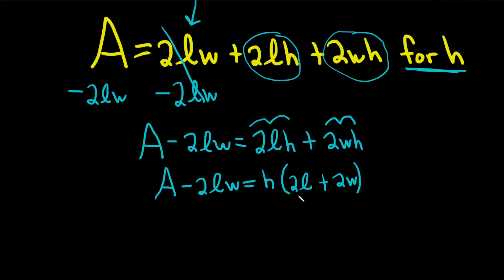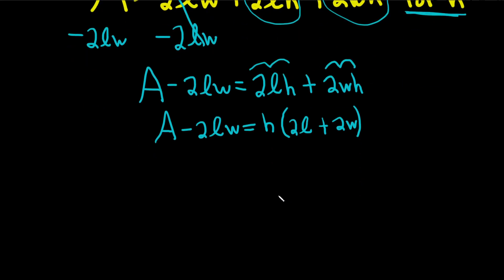We're almost done, actually. We're looking for H. It's being multiplied by this whole 2L plus 2W term. So to undo the multiplication, we can use division.